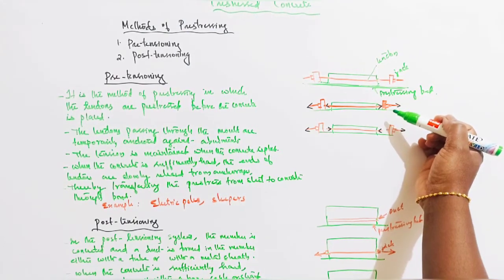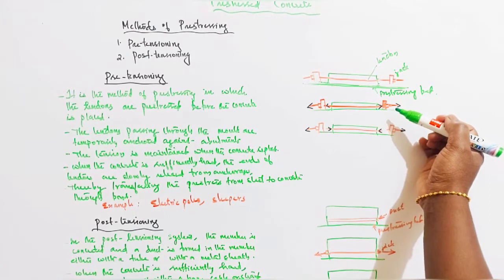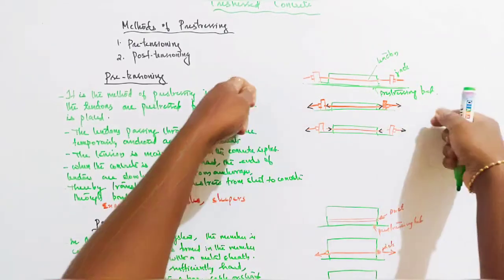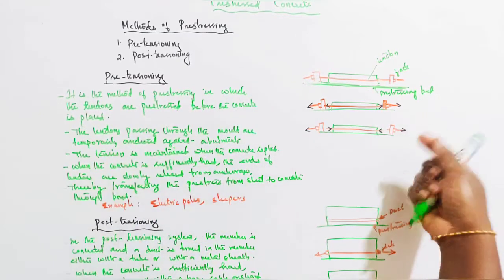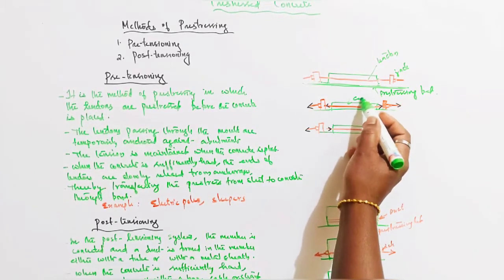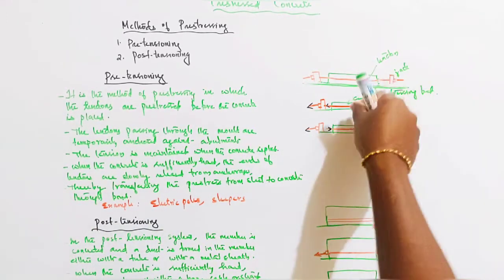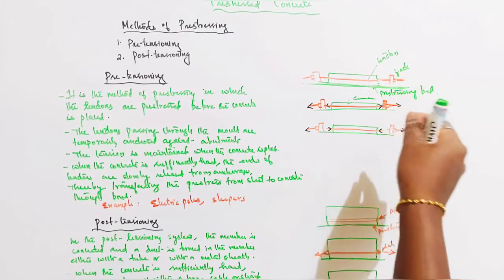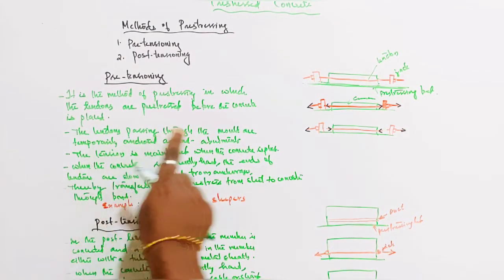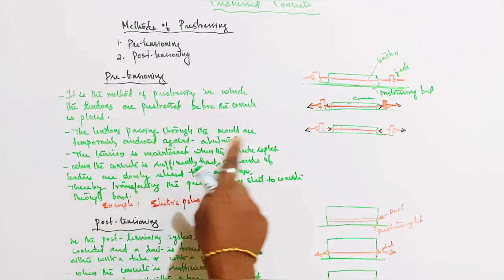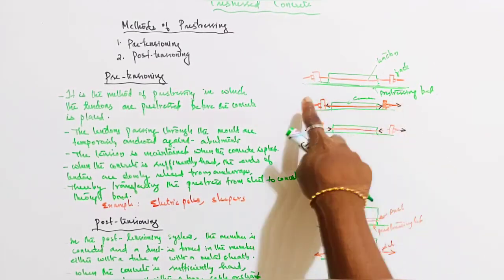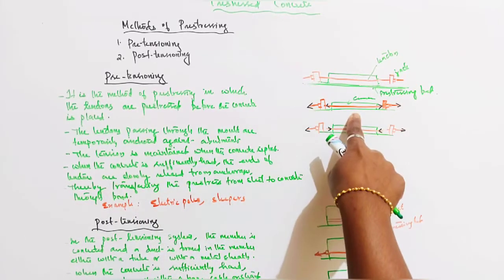The pre-stressing is applied as follows: on the mold, we set the pre-stressing wires - a tendon. The tendons are attached to anchorage. Then concrete is not yet applied - first the tendons are tensioned, then concrete is cast. The tendon passing through the mold is temporarily anchored against the abutment. The tension is maintained when the concrete is placed.